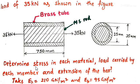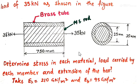We have to determine the stresses in each material — the brass tube and MS rod — the load carried by each member, and the extension of this composite bar. Given: Young's modulus of steel E_S = 210 GN/m² and Young's modulus for brass E_B = 95 GN/m².